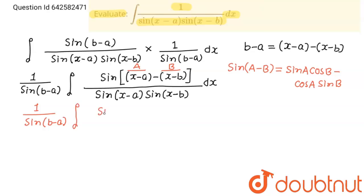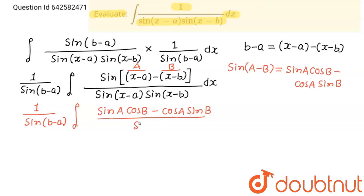I am going to apply this formula in the next step. Consider x minus a as capital A and x minus b as capital B for easier calculation, and don't replace dx with anything. At last we will put x minus a in place of capital A and x minus b in place of capital B. So this will become sin A cos B minus cos A sin B, whole upon sin A sin B, dx.